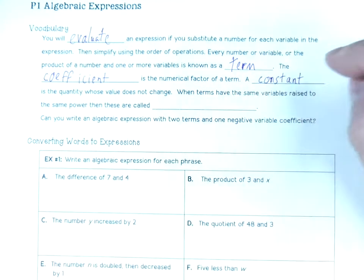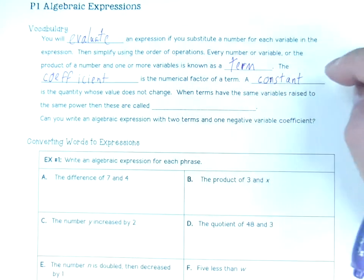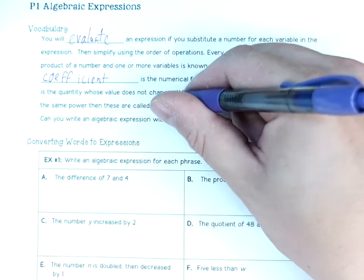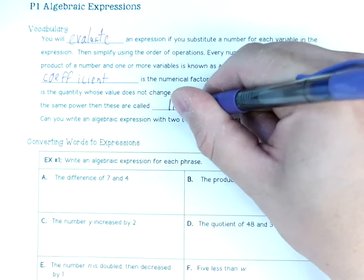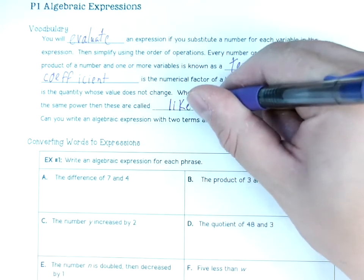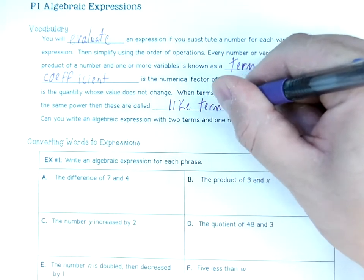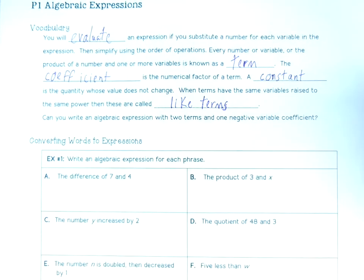When terms have the same variable raised to the same power, they're called like terms. This is something you've gone over in Algebra 1 and in Algebra 2 — we're just reviewing for these first few lessons what the items are.